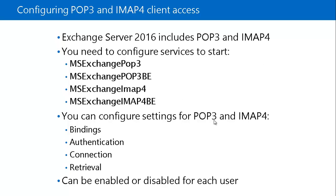POP3 and IMAP are automatically enabled for users at service start. The settings for a user show POP3 and IMAP already enabled, but the services themselves are not started by default — you must start them manually. You can enable or disable POP3 and IMAP for individual mailboxes via the properties of each mailbox in the Exchange Admin Center, or by using the Set-Mailbox command.